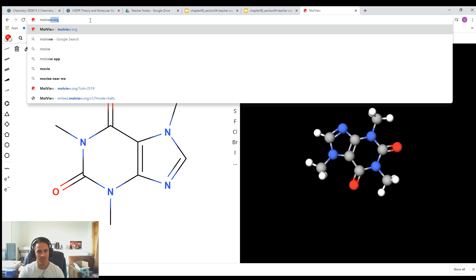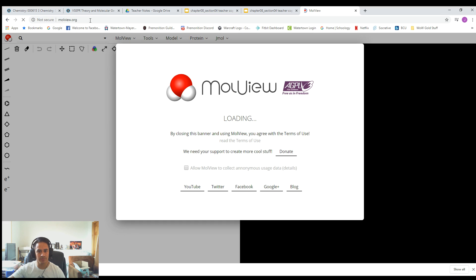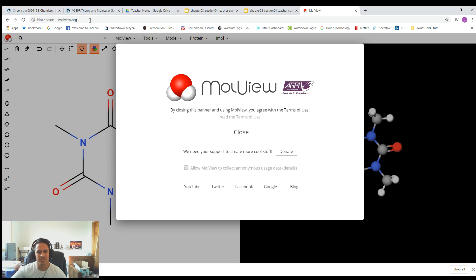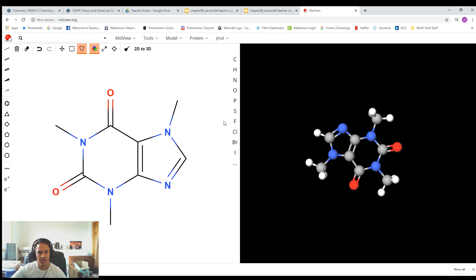So M-O-L-V-I-E-W dot O-R-G, hit Enter. It's going to bring it up like this. Just hit Close at the beginning. So by default, it has a molecule that's already shown here. You can just delete it.